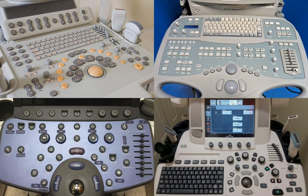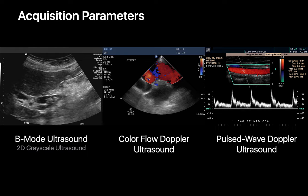In this talk, we're going to review the different acquisition parameters and controls you may need to tweak when performing an ultrasound study. We'll provide you with a better understanding of what all of the buttons, knobs, sliders, toggles, and other controls on the console of an ultrasound machine do, regardless of if you're doing a standard 2D grayscale ultrasound or using Doppler imaging techniques like ColorFlow or Pulsed Wave Doppler.